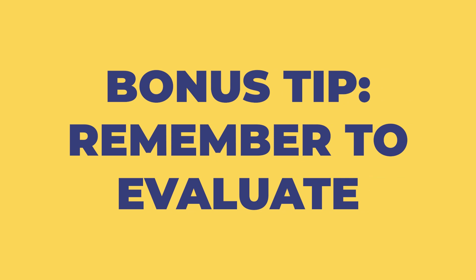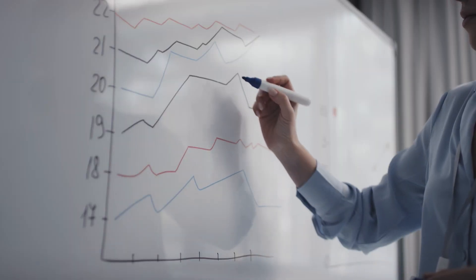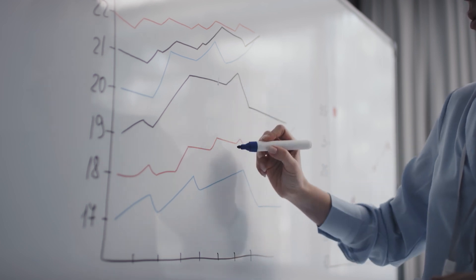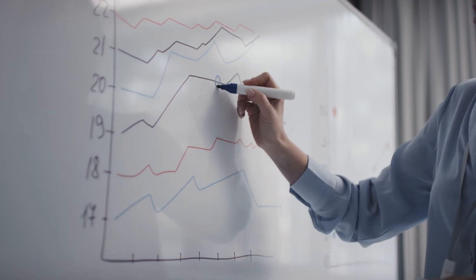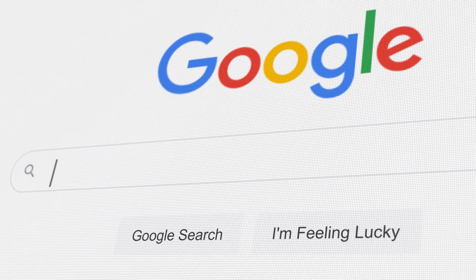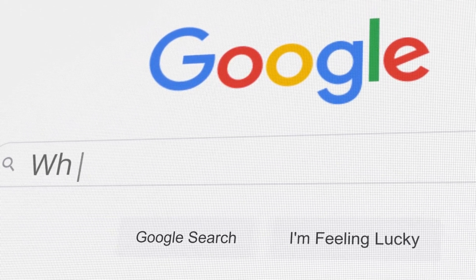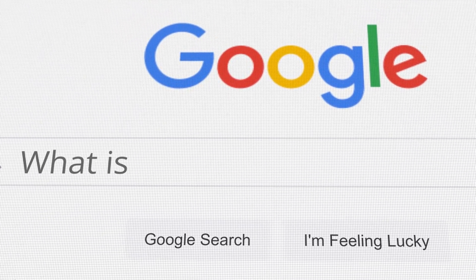Here's a bonus tip: remember to evaluate. When you want to rank for specific words, it's important to see if you're doing well. You should regularly check to see if people are actually finding your content. One way to do this is by searching for your target keyword on Google from time to time. Keep in mind that the results you see might be influenced by your own search history, because Google customizes the results for you.